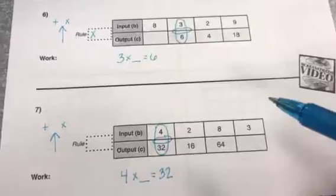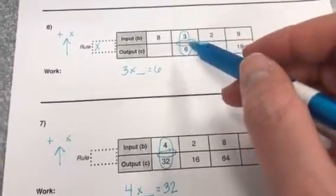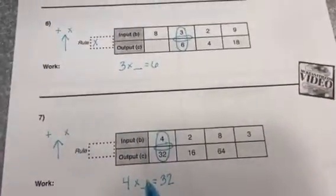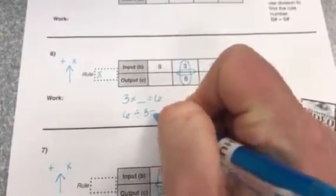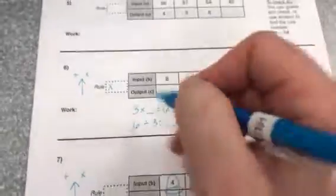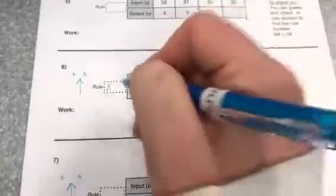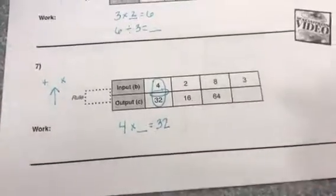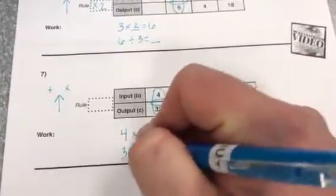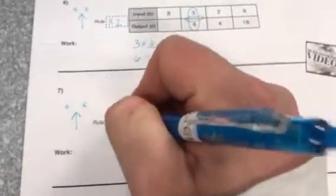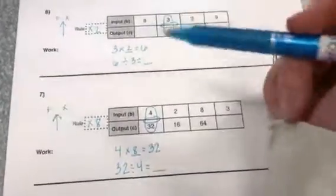All right, so you can do three times something equals six, and maybe you just know what the number is. You go, oh I know what number goes there, and so you write it in. Or let's say you don't. We can do the inverse operation, which would be six divided by three equals blank. The inverse operations mean we do the opposite operation to find a missing number. So you could solve that and know that the rule is times two, so you can put that in there. Down here, four times what equals thirty-two? Maybe you just know. What do you do if you don't know? You can do the inverse: thirty-two divided by four equals and it'll tell us the rule number. So we know four times eight, so that rule is times eight.